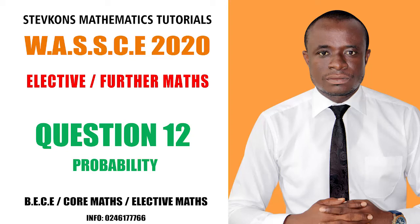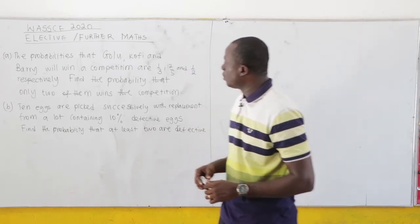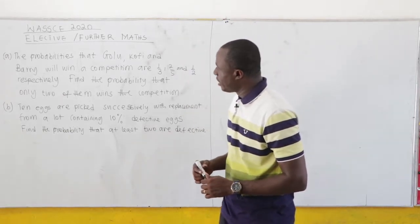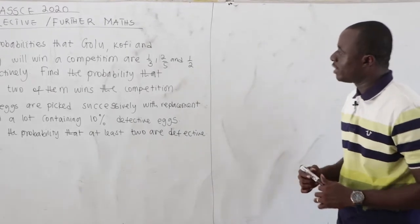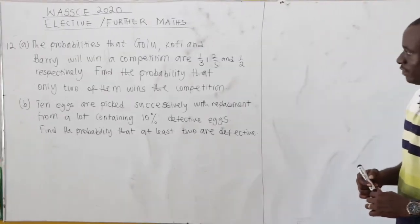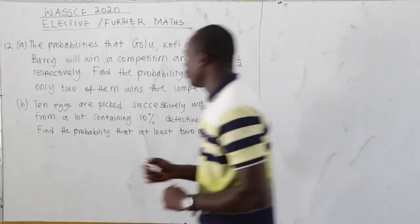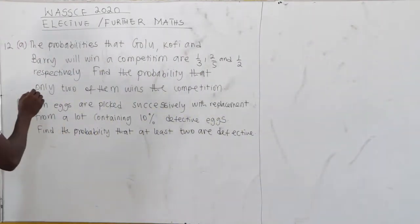This is 2020 Elective Maths, question number 12. The probabilities that Golu, Kofi, and Barry win a competition are 1 over 3, 2 over 5, and 1 over 2 respectively. Find the probability that only 2 of them win the competition.